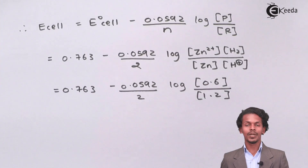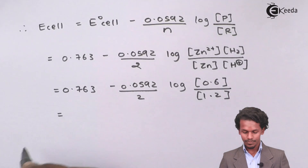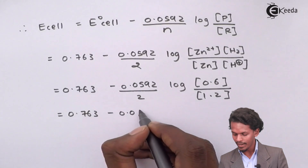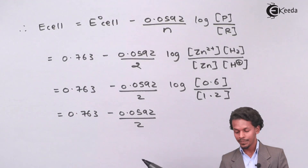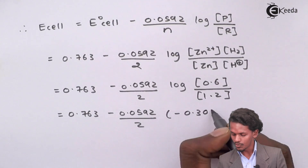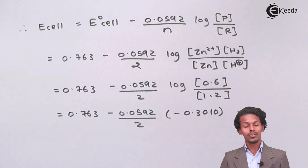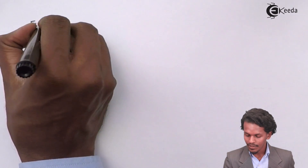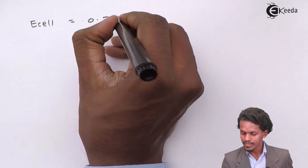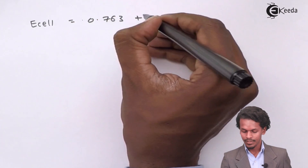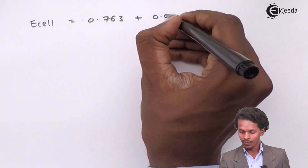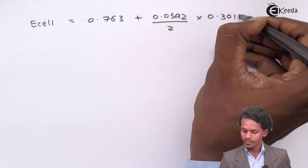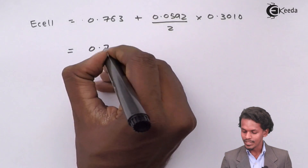Substituting the values: E_cell = 0.763 − (0.0592 / 2) × log(0.6 / 1.2²) = 0.763 − (0.0592 / 2) × (−0.3010). This gives E_cell = 0.763 + 0.00889 ≈ 0.771 V.